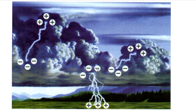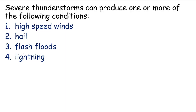The second kind is when electrons move from cloud to Earth. The Earth's surface is mostly positively charged, so electrons move from the negative side to the positive side - a discharge from cloud to earth. The third kind is lightning between two parts of the same cloud.